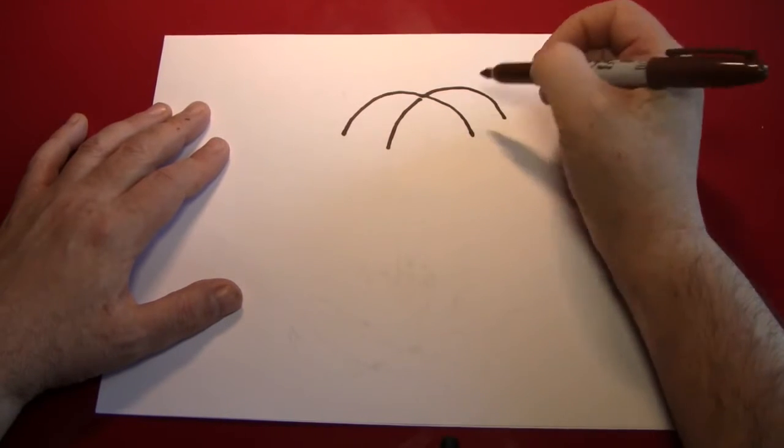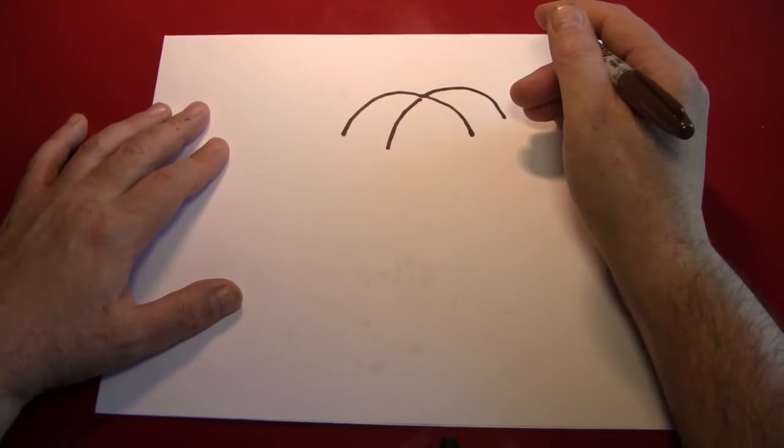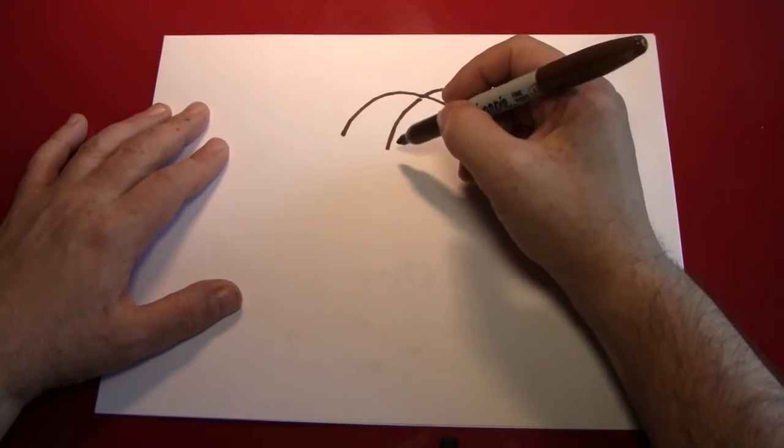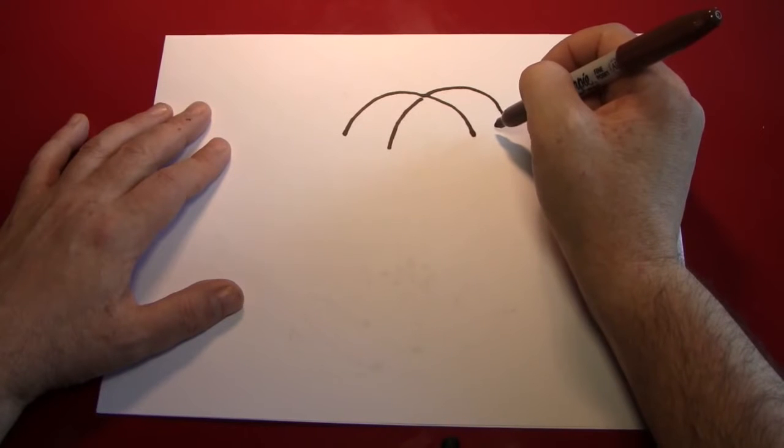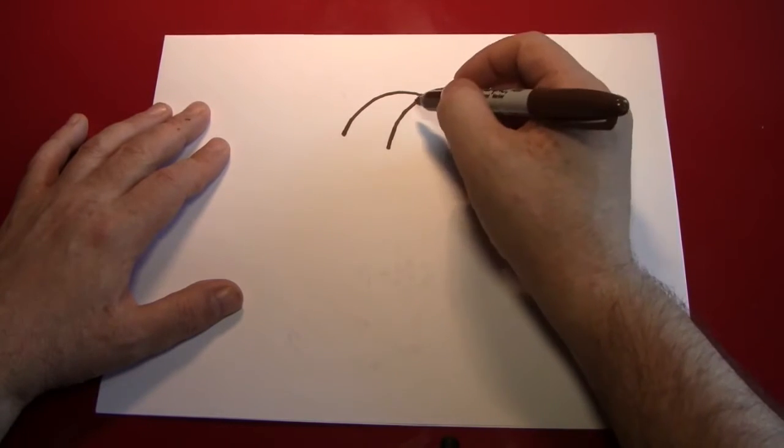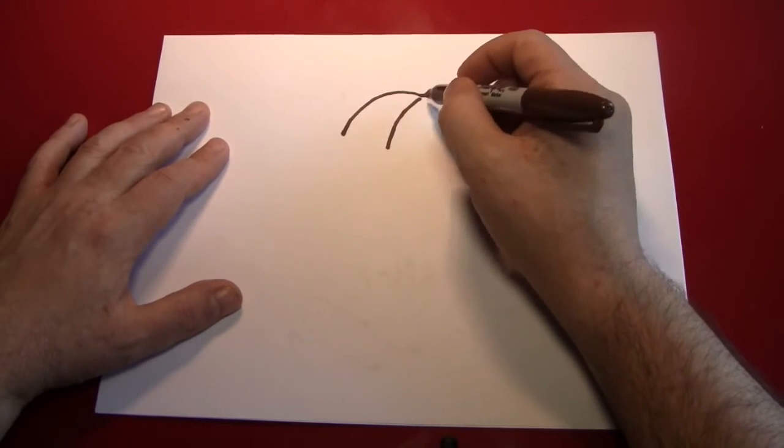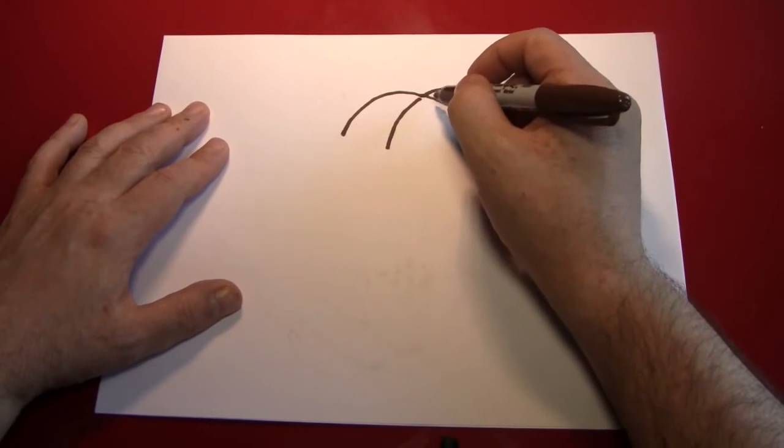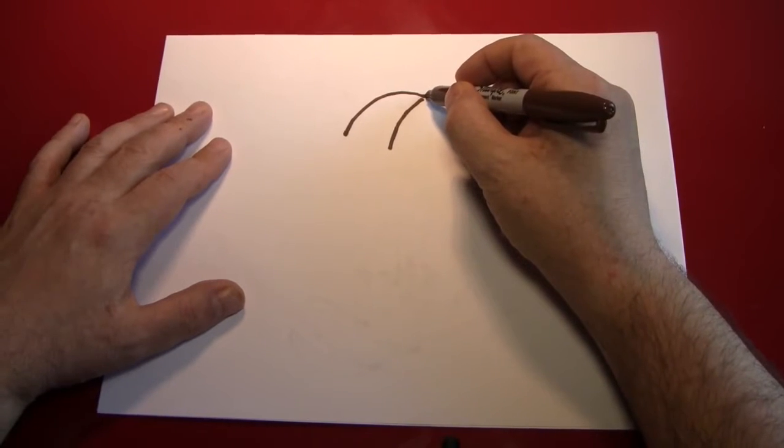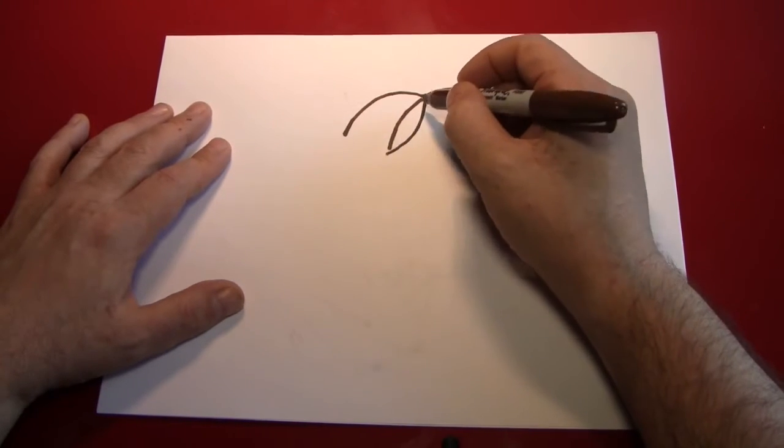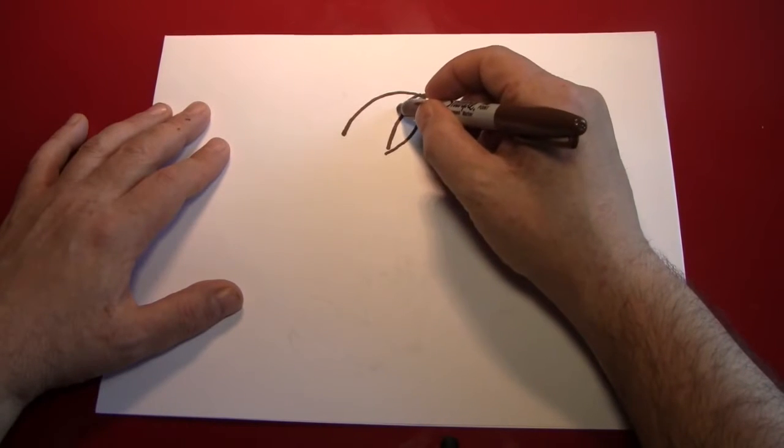Well that's nice, that's basically all you need to start. Now these are the center veins of the leaves, and we're just going to build the leaves around them. So first let's build this leaf. Since it seems to be up front more than the others, simply start here where the points converge, come out a little bit and back in, and do the same thing on the other side.